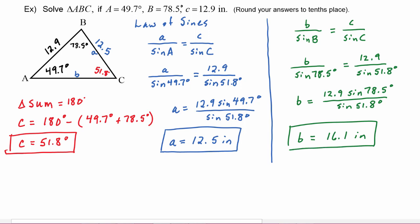Put a box around your answer, come over to the picture, and label the side. When you're done solving a triangle, you should have a picture with all three angle measures and all three side measures filled in. Show your work and box your answer — this is what will be looked for when grading your exams, and the best way to make this a habit is to do all your homework this way.